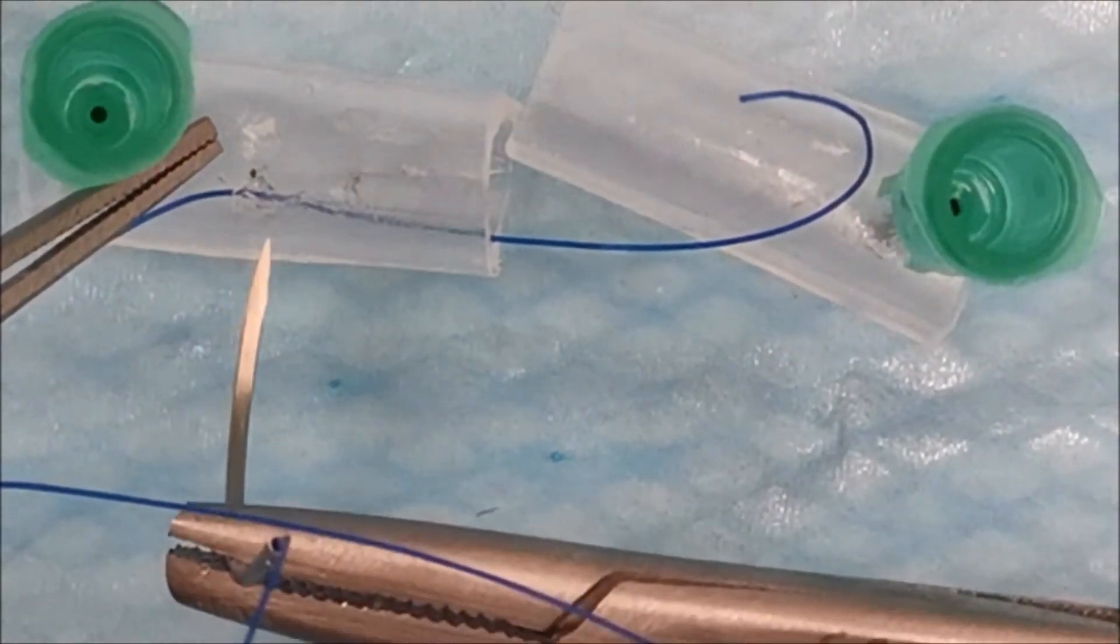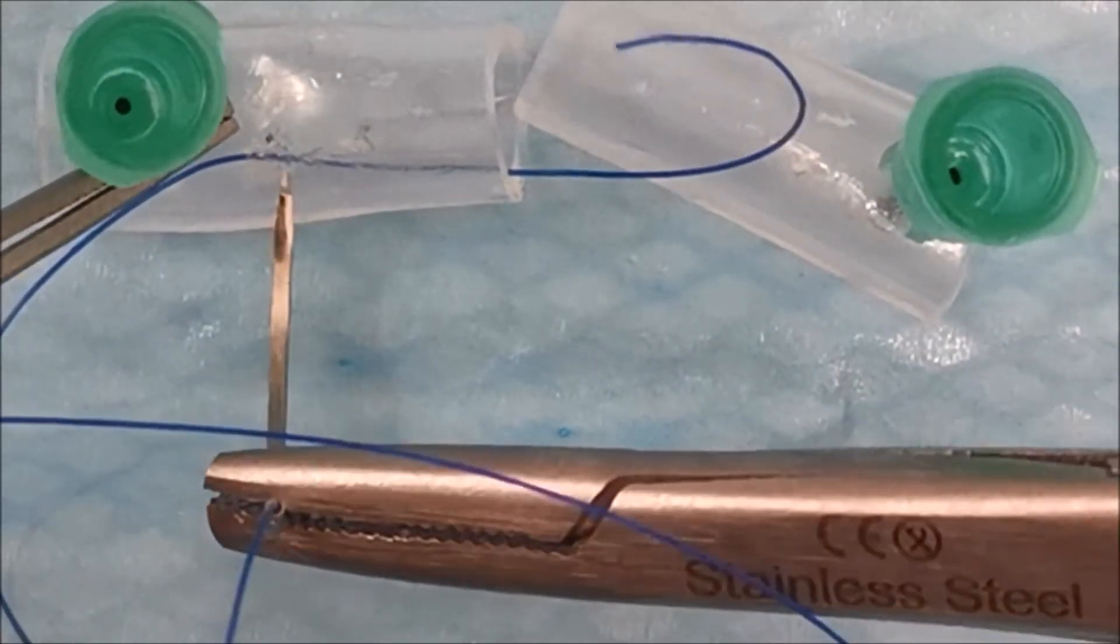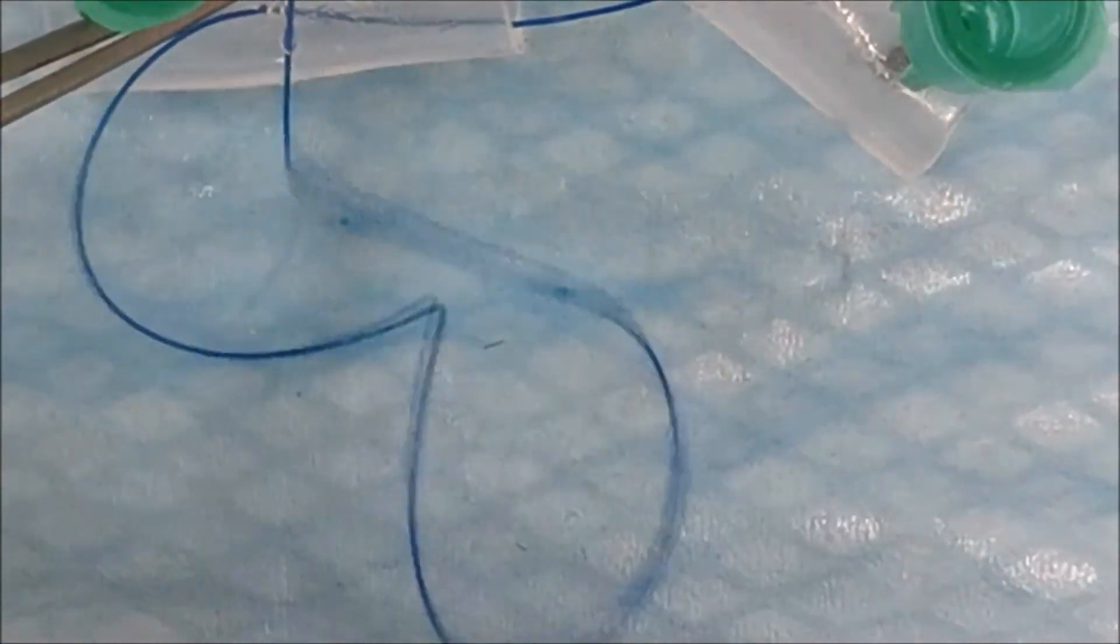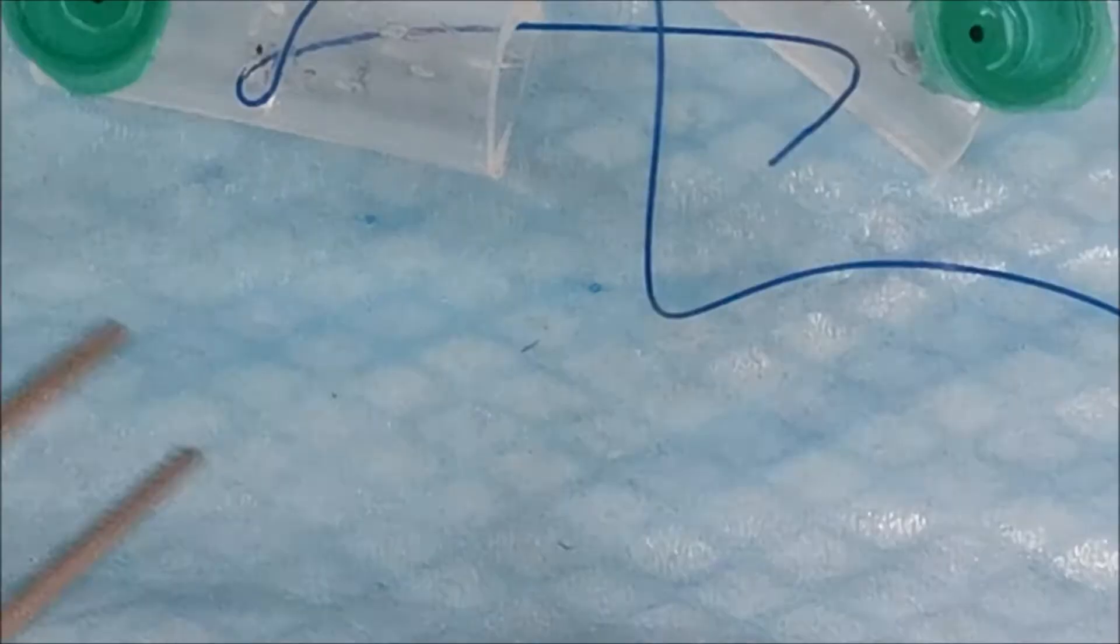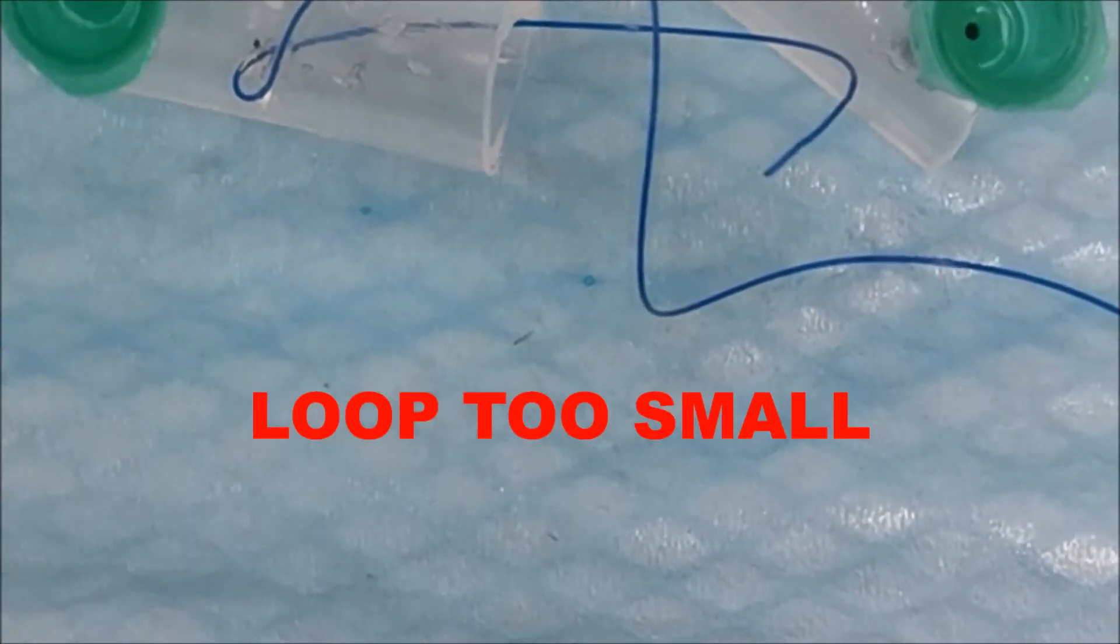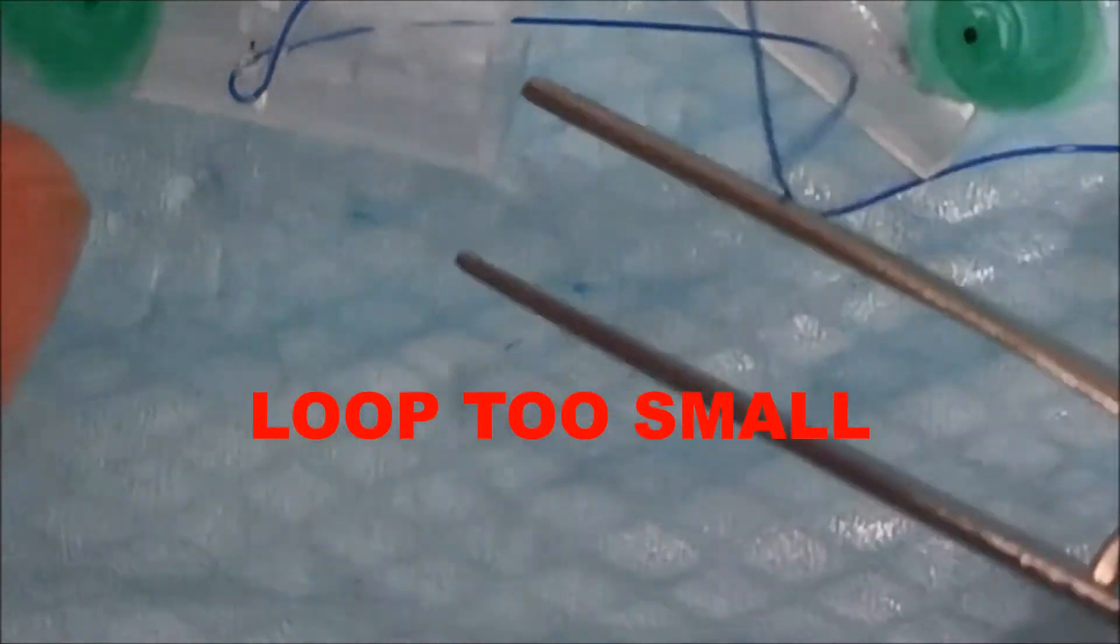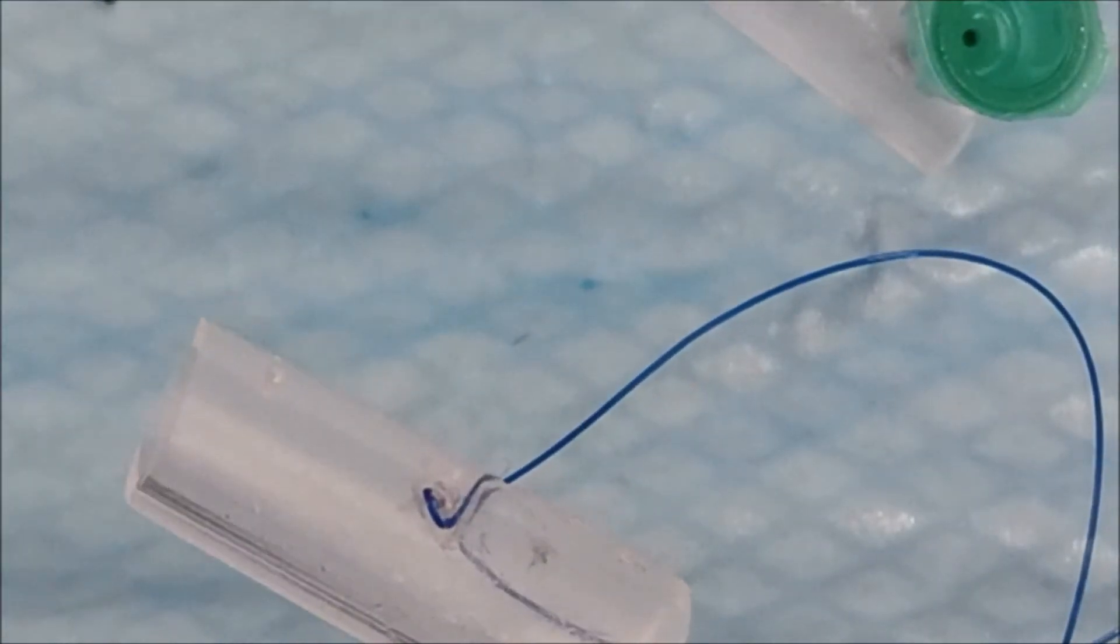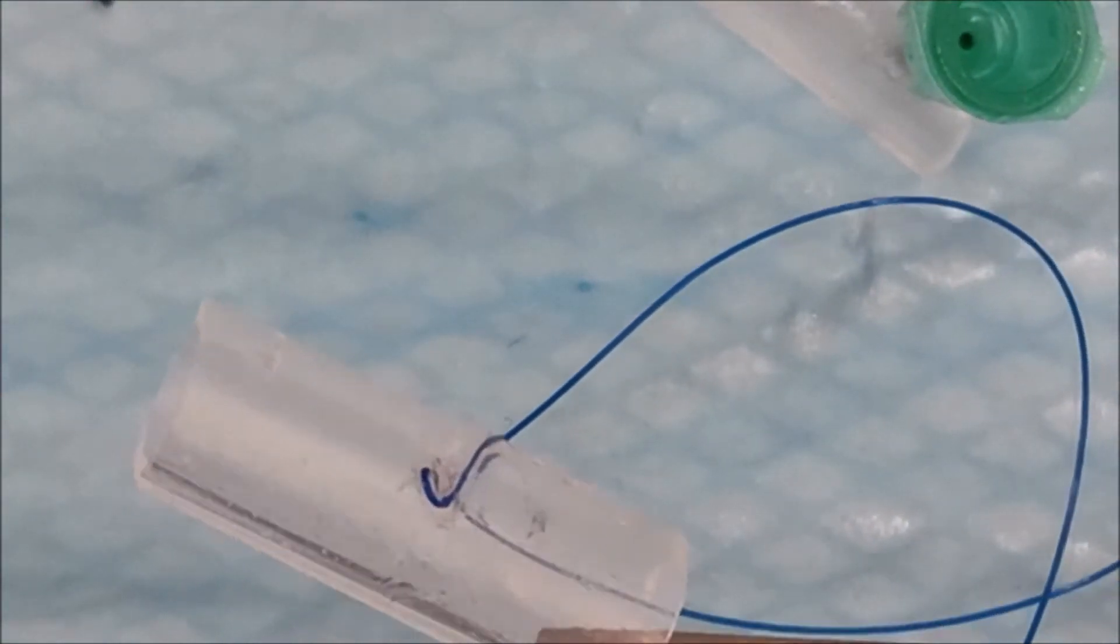Another common error is actually making your loop too small. If this happens, you're only grasping a very small percentage of fibers. If you look at this from the lateral view, you can see how many fibers you'd actually be grasping with that little loop.